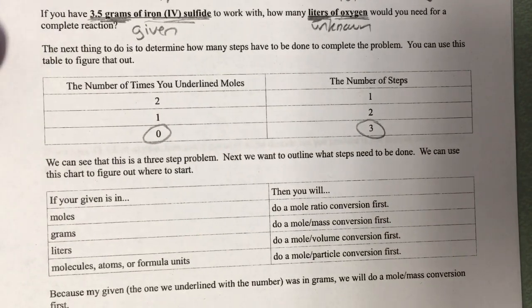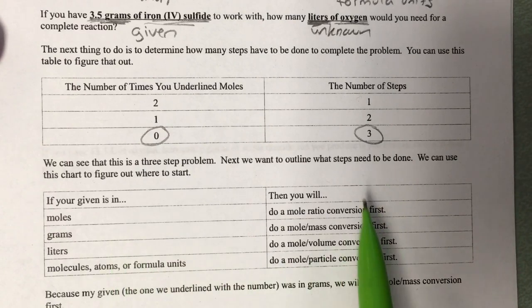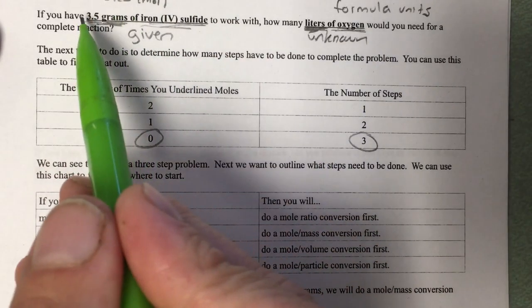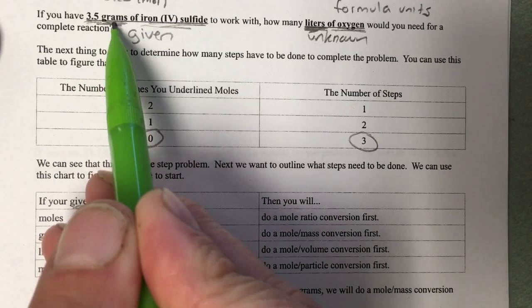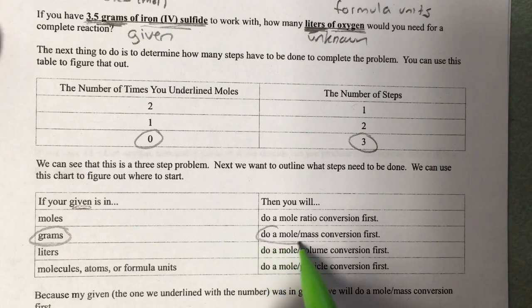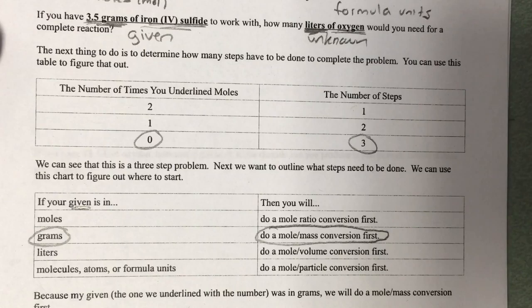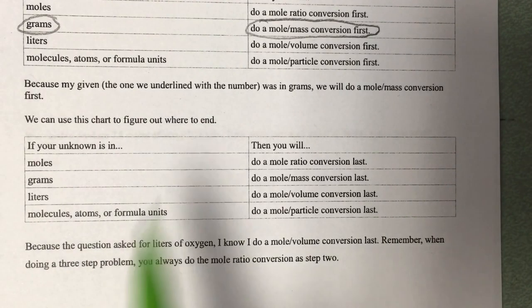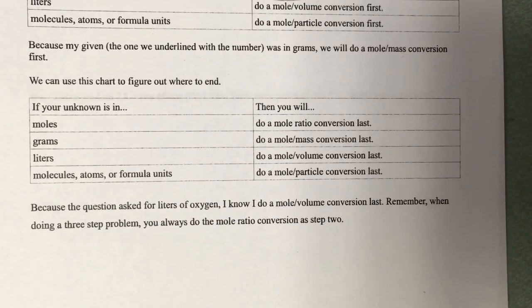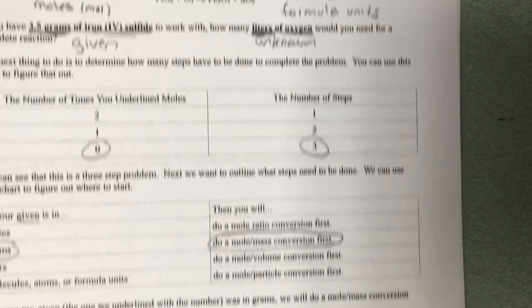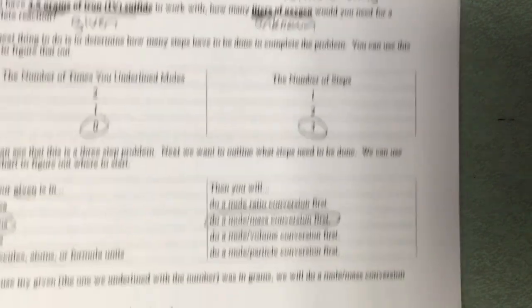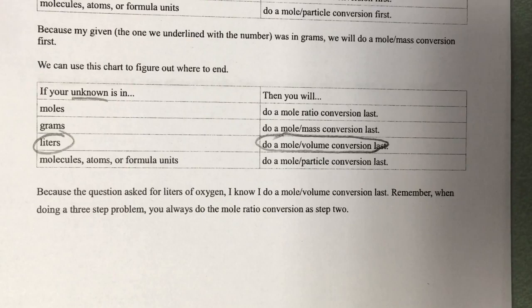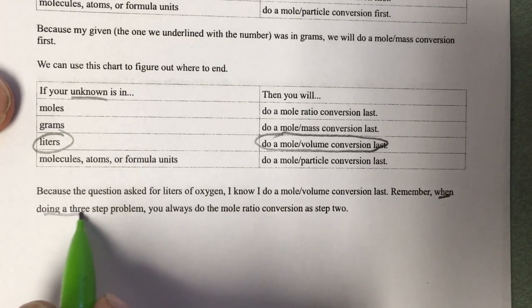Now I figure out what those steps are going to be using these tables. The first table tells me what step I'm going to do first — it's all about what unit the given is in. My given is in grams, so I know the first step will be a mole-mass conversion. The second table tells me where to end. I look at the unknown — my unknown is in liters, so I know I'll end with a mole-volume conversion.